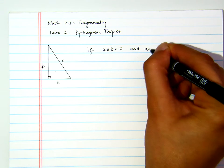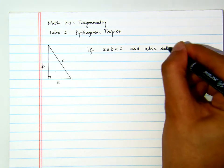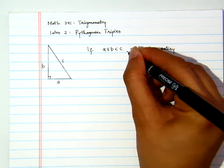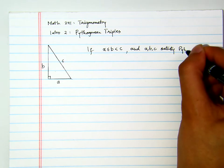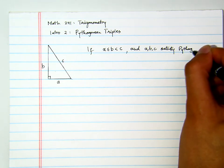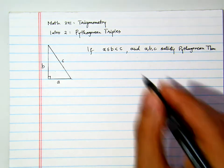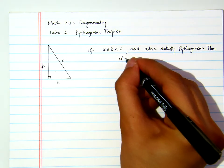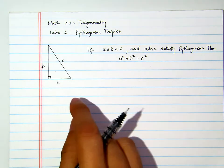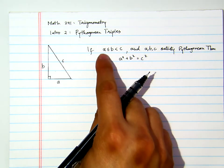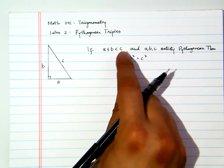and A, B, C satisfy Pythagorean Theorem, where A squared plus B squared equals to C squared. So we purposely assign A to be the smaller one or at most equal to B, and both of them, for sure, is less than C.